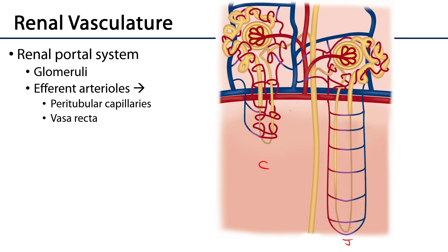Let's take a look at cartoons of cortical and juxtamedullary nephrons and their blood supply. Here's the medulla, the cortex, an arcuate artery supplying blood up through a cortical radiate artery, then afferent arterioles into the glomeruli making filtrate, followed by efferent arterioles giving rise to peritubular capillaries — needed for tubular secretion and reabsorption. In a juxtamedullary nephron, vasa recta dive deep with the elongated nephron loop to pull water out of the medulla, maintaining the hyperosmotic gradient that allows water to flow chasing sodium out of the nephron loop.